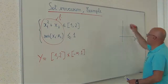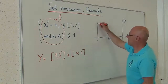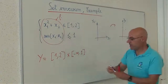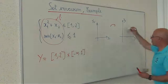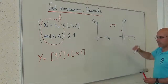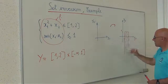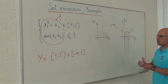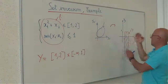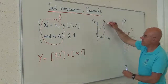Here, with variables y1, y2, x1, x2, the function f is given here and the set Y corresponds to [1,2] × (-∞, 1], corresponding to this set shown. The set inversion problem amounts to computing the reciprocal image of the set Y by f.